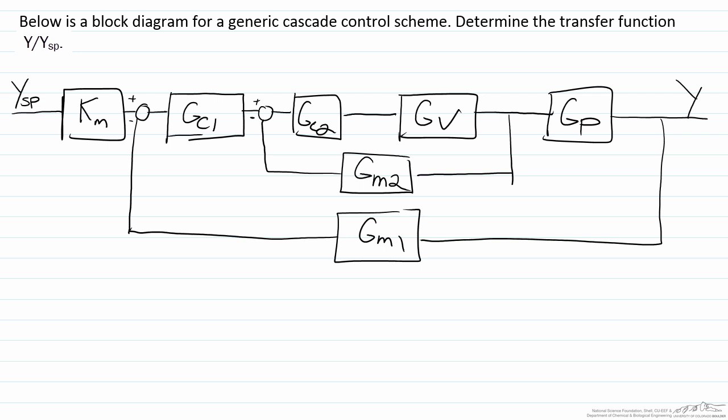What we show here on the block diagram is a relatively generic cascade control scheme. Depending on your process and what variable is being used as a secondary variable, this diagram can look a bit different. However, the procedure you will use to determine the transfer function relating the output variable y to your setpoint value ysp would be relatively similar.